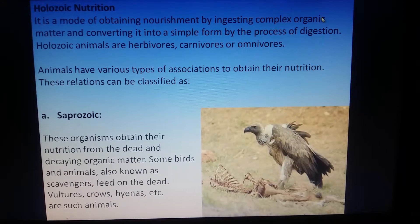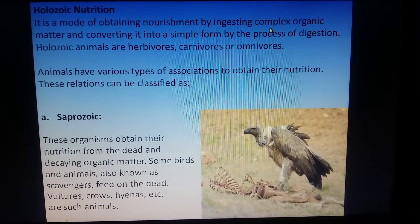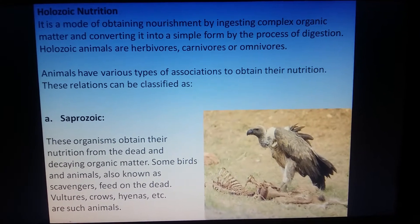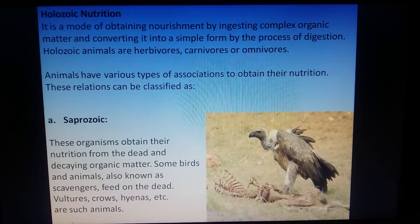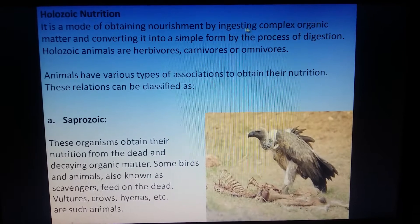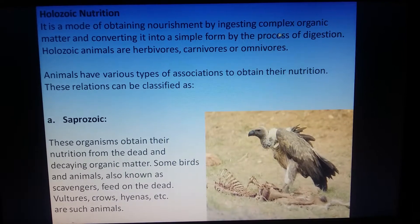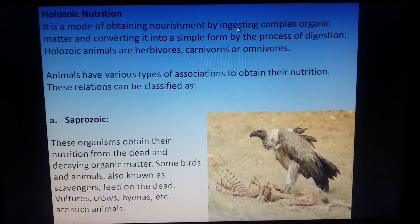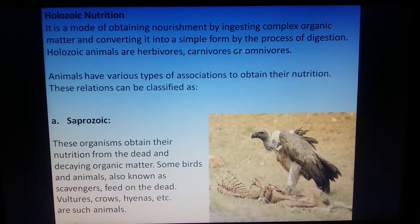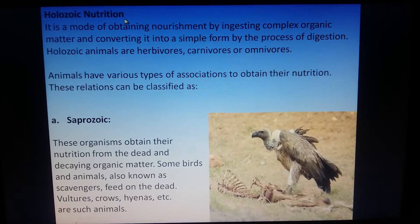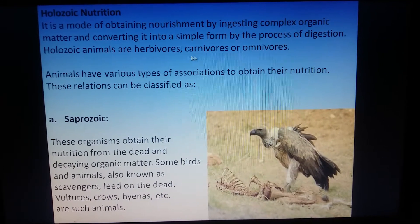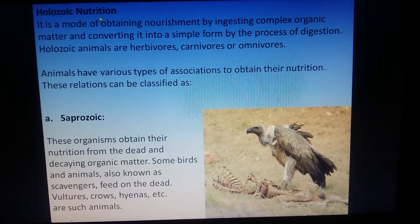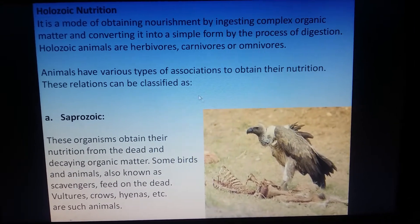We are not able to make our own food through photosynthesis or any similar process, so we take our food in complex form and perform digestion to break it down into simple form. Such a mode is called holozoic nutrition. All herbivores, carnivores, and omnivores follow this mode.